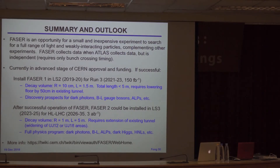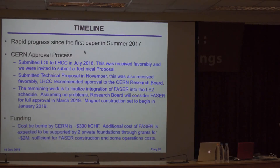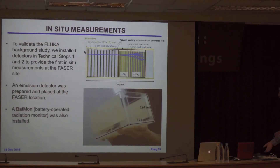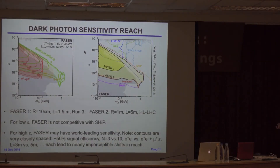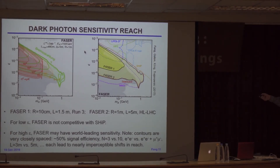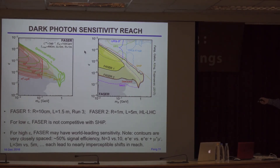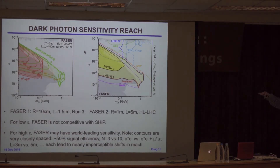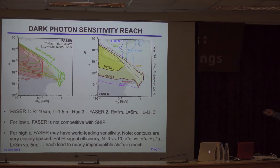Question: Can you show the reach plots again — what are the gray excluded regions from the past? The upper gray region is from milli- and micro-charged experiments, typically BaBar and Belle. The lower excluded region is from fixed-target experiments like CHARM and E-137, where you send the beam into a pile of material and look ~60 meters downstream.